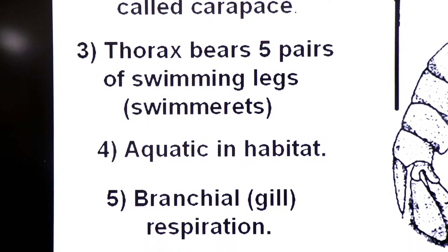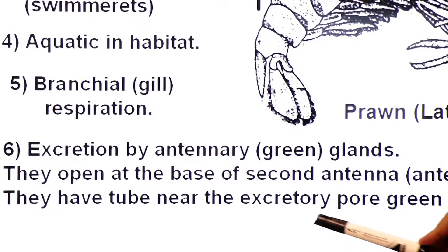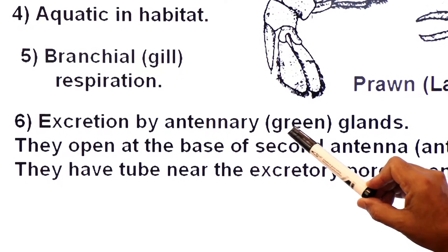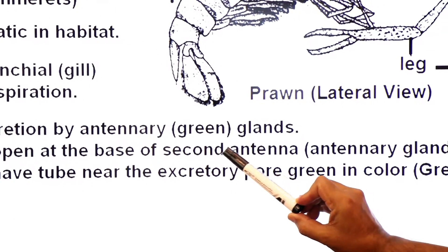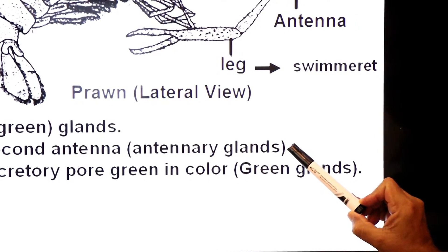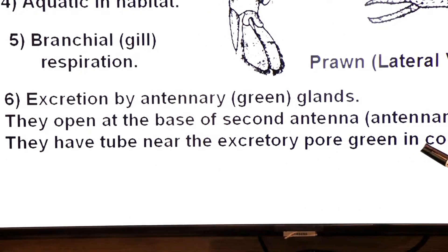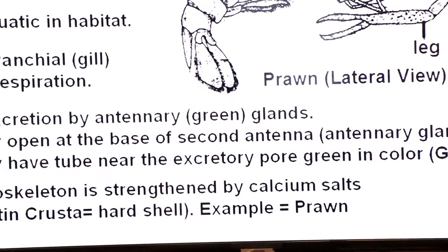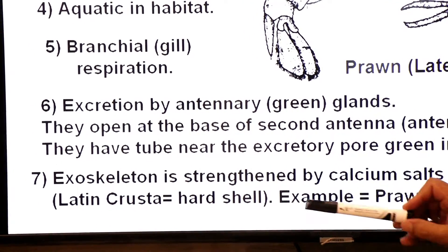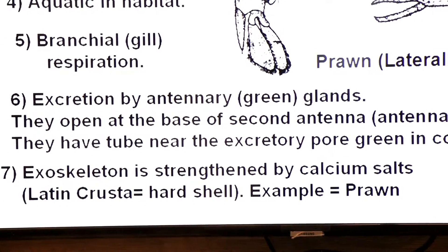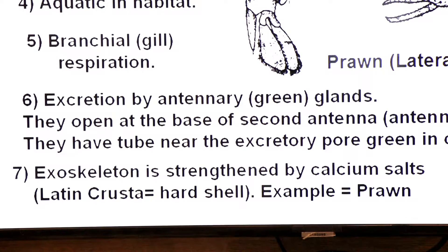Prawns are aquatic in habitat; therefore respiration takes place by gills — branchial gill respiration. Excretion occurs by antennal glands, also called green glands. They are called antennal glands because they open at the base of the second antenna. They are called green glands because they have a tube near the excretory pore which is green in color. The exoskeleton is strengthened by calcium salts — calcified — which is why this class is named Crustacea, meaning hard shell.